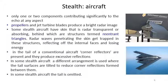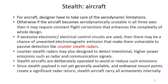In conventional aircraft, corner reflectors in the tail produce excessive reflections. In some stealth aircraft, tail surfaces are tilted to reduce corner reflections, and in some the tail is omitted entirely. However, removing the tail creates aerodynamic instability in all three axes, requiring constant flight corrections and enhancing the complexity of the design.